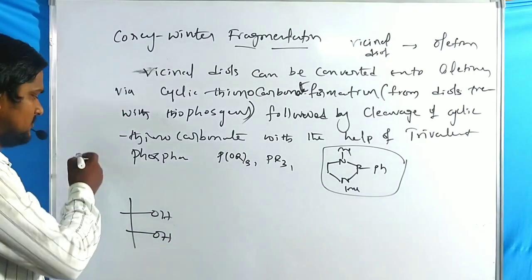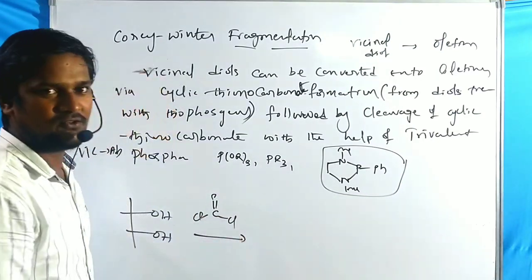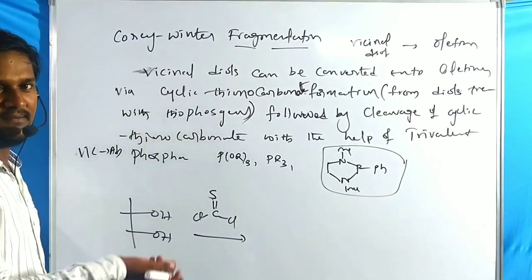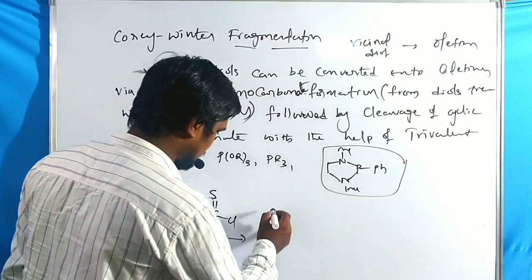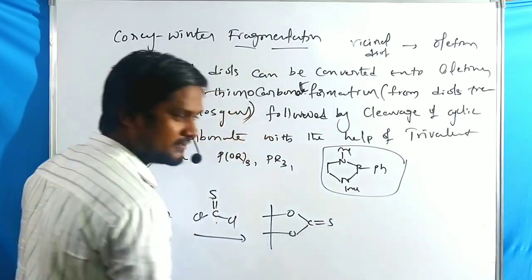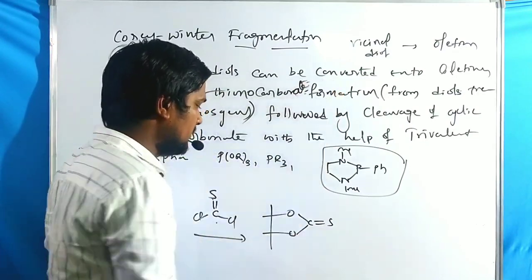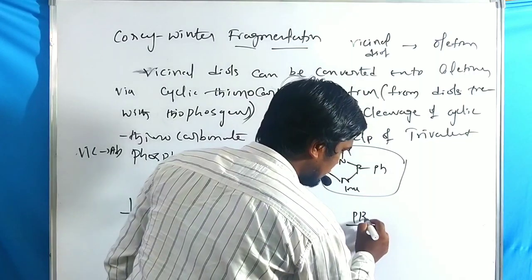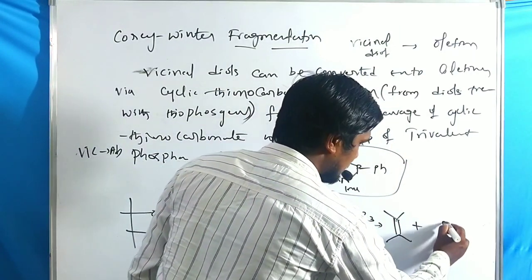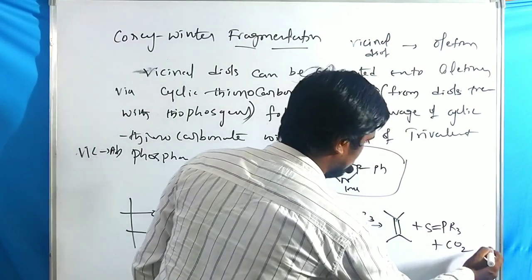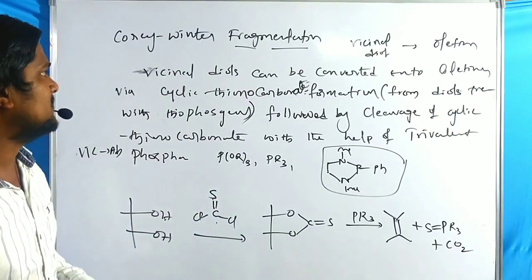The reaction proceeds as follows: vicinal means adjacent, so adjacent diols are treated with thiophosgene (compare: phosgene is COCl2; substituting sulfur for oxygen gives thiophosgene). Diols treated with thiophosgene give a cyclic thionocarbonate (O-C(=S)-O). This thionocarbonate, treated with 2 to 2.5 equivalents of trivalent phosphorus, gives olefins plus P=S·R3 and CO2 as byproducts. This is the simplest representation of Corey-Winter fragmentation.